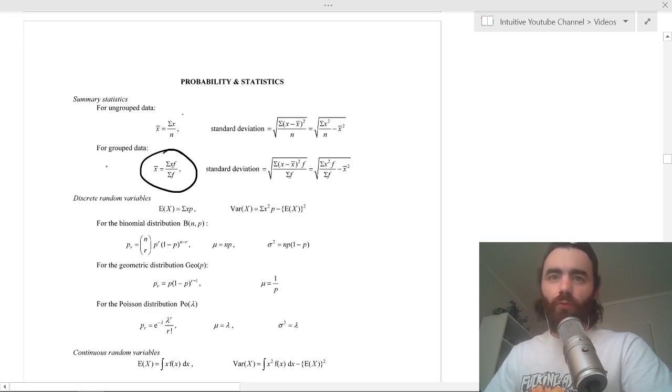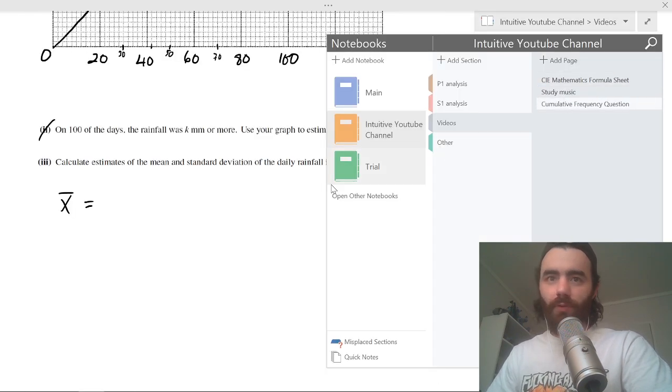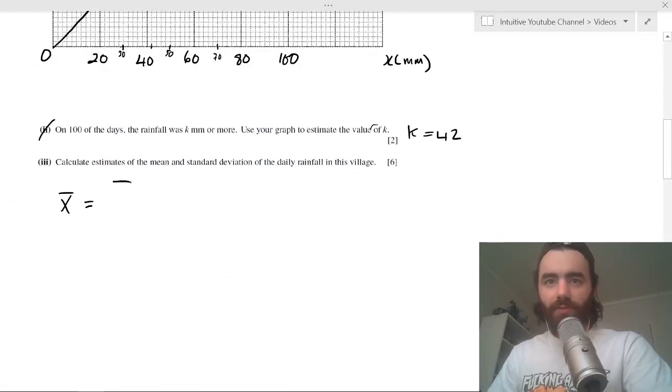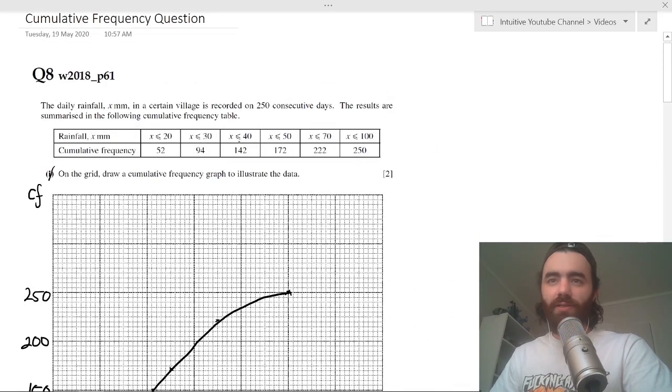What you do is you go to your formula table and you have this formula for grouped data, which is this. It says it's the sum of xf over the sum of f.